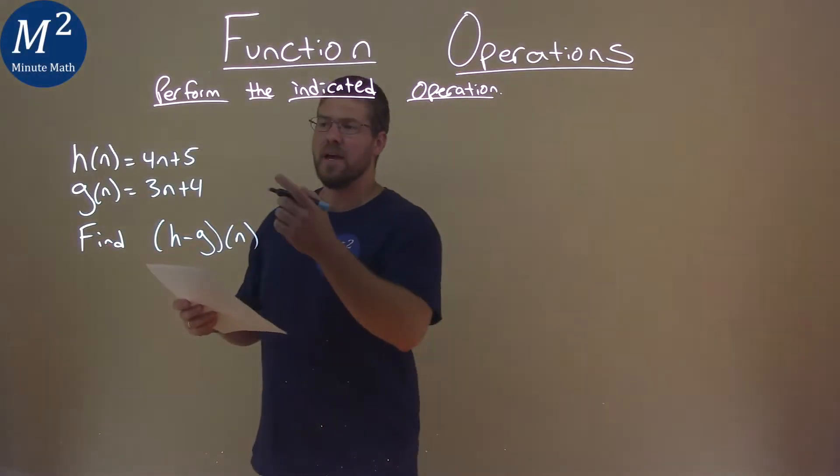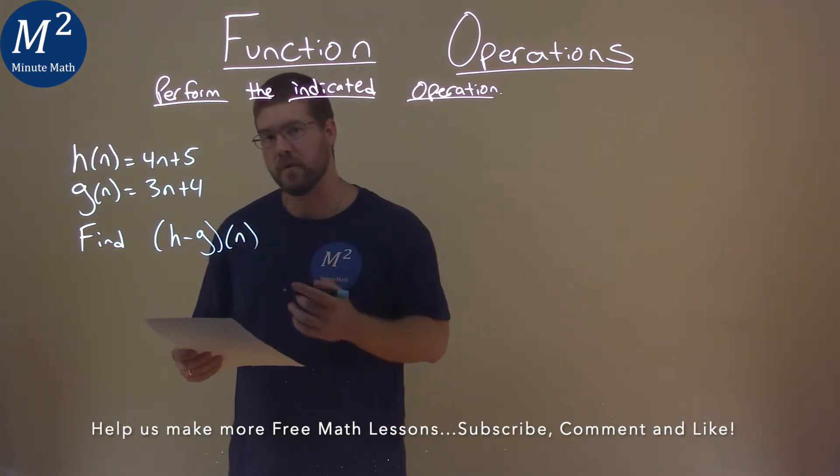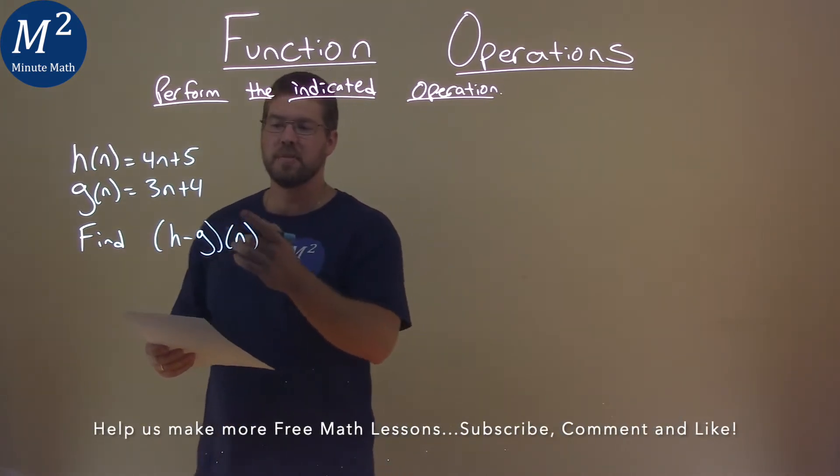We're given this problem right here. h of n is equal to 4n plus 5, and g of n is equal to 3n plus 4, and we need to find h minus g of n.